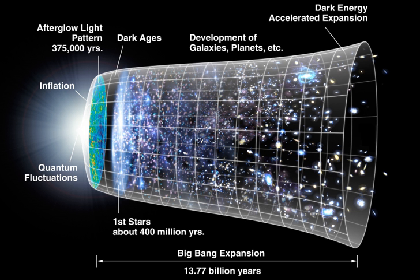In the comoving coordinate system, the grid expands along with the universe, and objects that are moving only because of the expansion of the universe remain at fixed points on the grid. While their coordinate distance remains constant, the physical distance between two such comoving points expands proportionally with the scale factor of the universe. The Big Bang is not an explosion of matter moving outward to fill an empty universe. Instead, space itself expands with time everywhere and increases the physical distance between two comoving points.